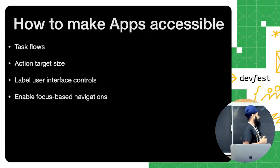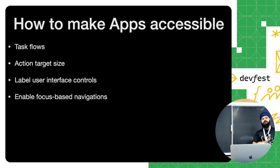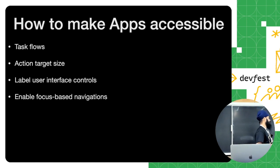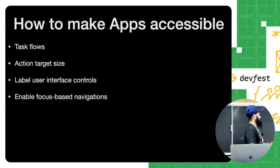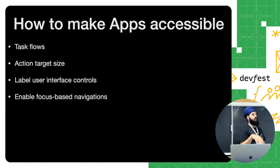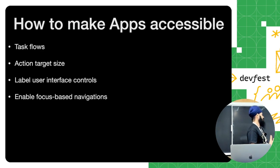The fourth is enabling focus-based navigation. TalkBack and screen reader are applications that users install on their phones, but if the user is using any hardware input method like switches or keyboards, we need to make sure they can interact with the application using those. We need to make sure the focus system is set properly so that when they navigate using arrow keys from the keyboard, the focus goes where they expect — not some random navigation.